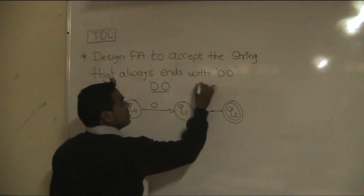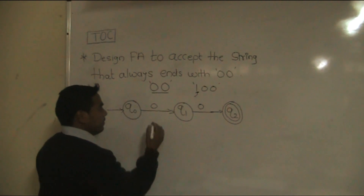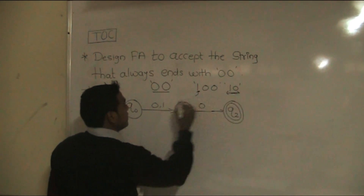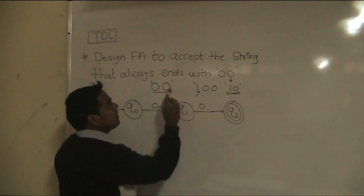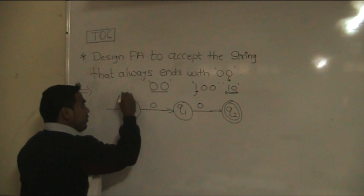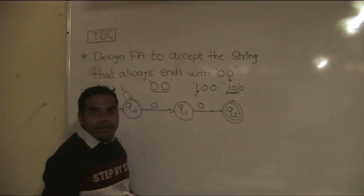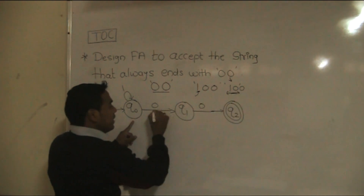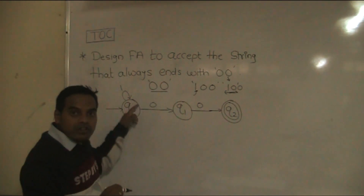Suppose we have the string 100. Whenever 1 comes at q0 state, we need to decide what to do. If you provide 1 as a transition from q1, that would allow a string ending with 10 to be accepted, which conflicts with our problem statement — the string must always end with 00. So we can't add that transition. At q0 state, when 1 occurs, it remains at q0 state (self-loop on 1). Then 0 comes, it goes to q1; then 0 comes, it goes to q2. So the string 100 is correctly handled.